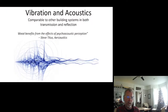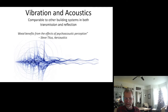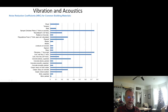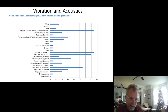What are the constraints associated with wood? Vibration and acoustics. We tend to think of wood as an acoustically absorptive material. My pal Steve Titus from Air Acoustics said wood benefits from the effects of psychoacoustic perception — we associate wood with warm, cozy environments and therefore assume it performs well acoustically. But if we look at noise reduction coefficients for common building materials, wood is at 0.15, while unpainted concrete is 0.2 — wood is actually not as good as unpainted concrete.